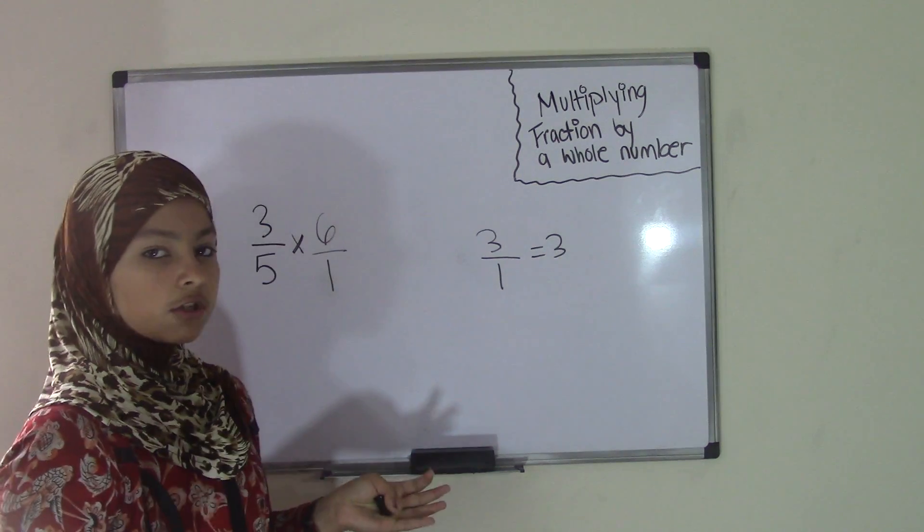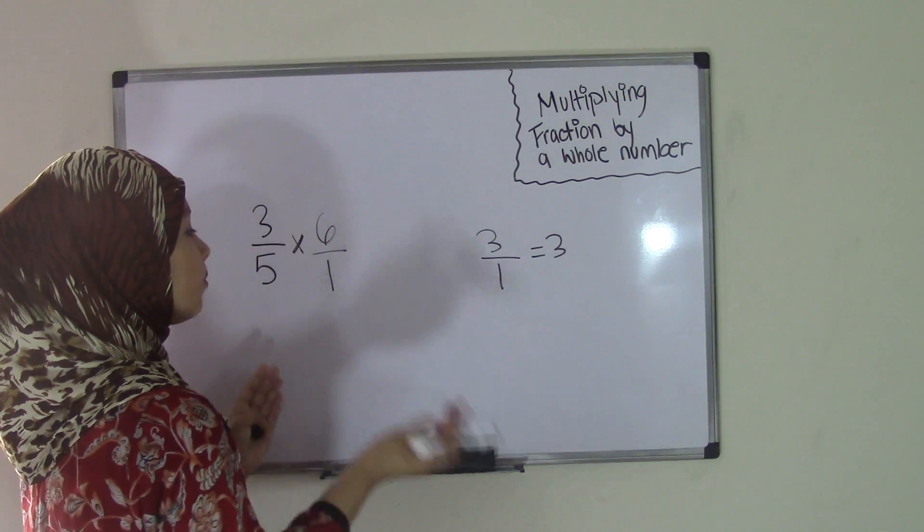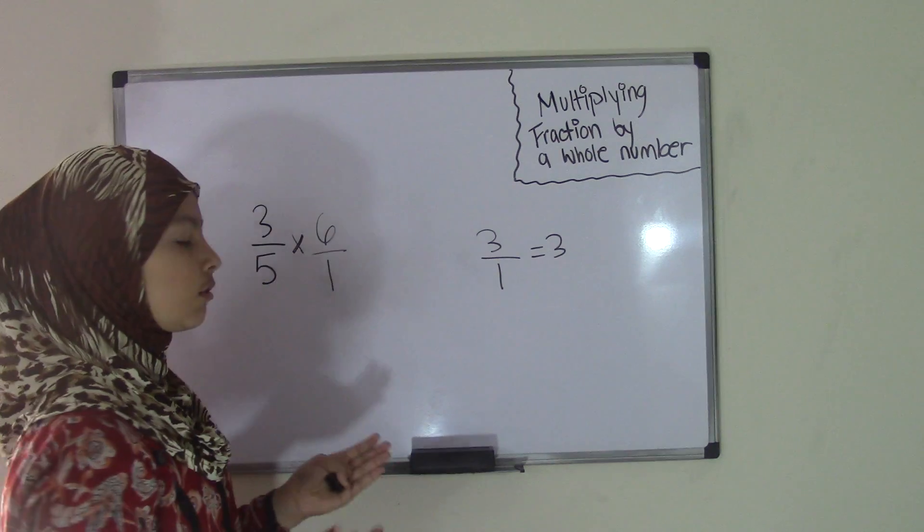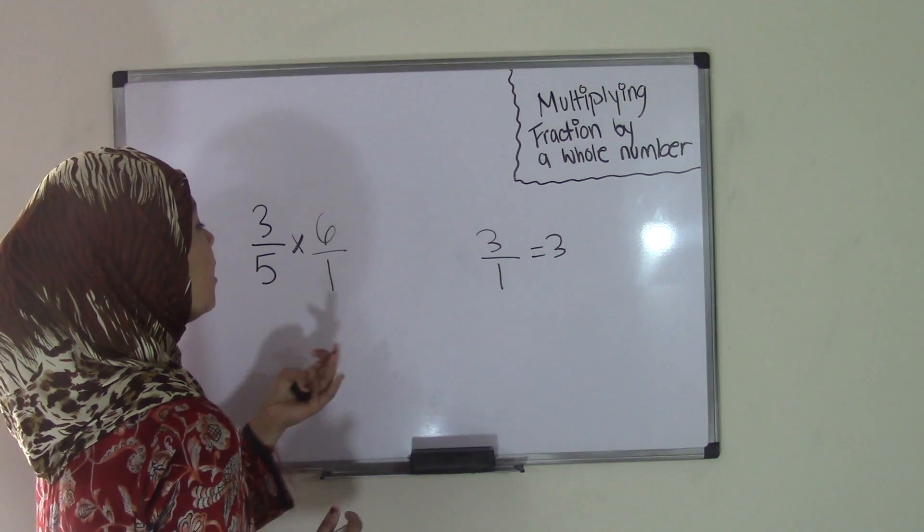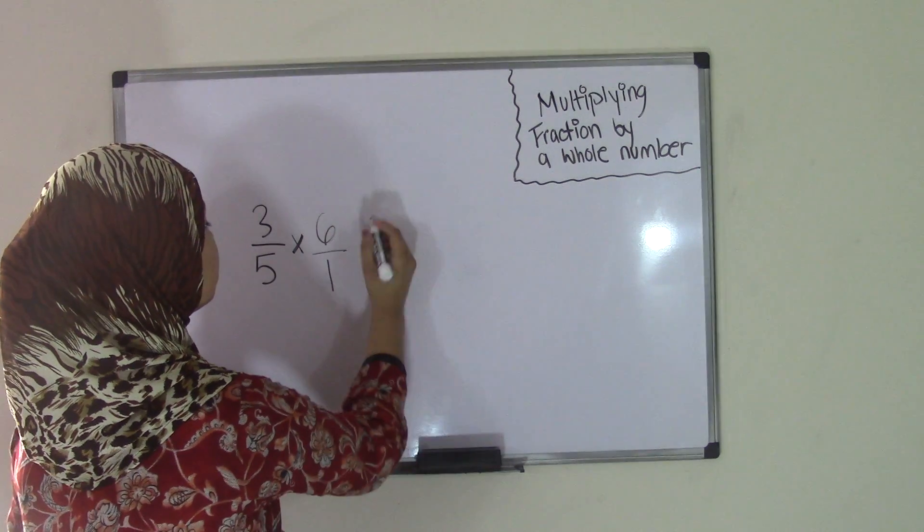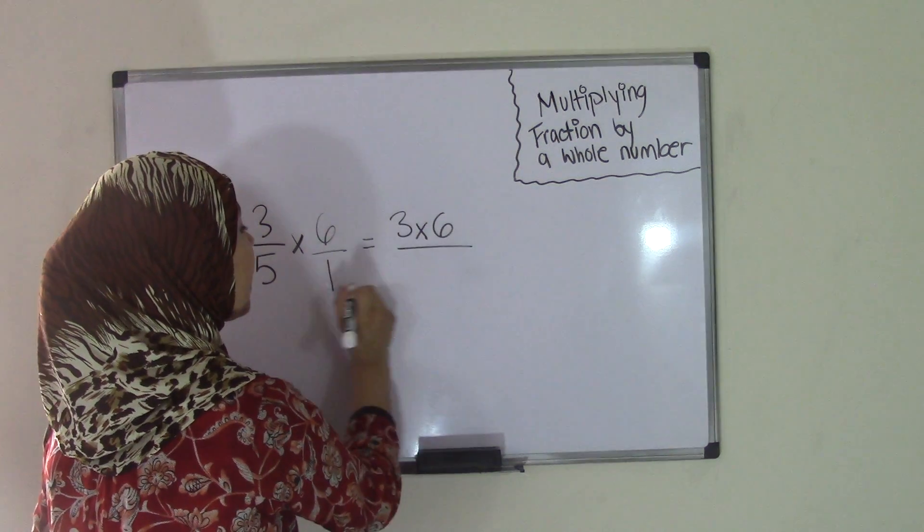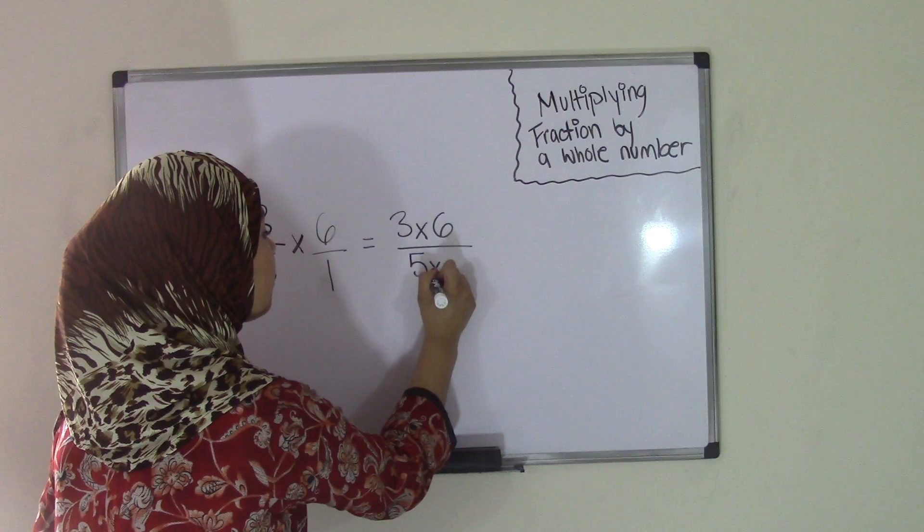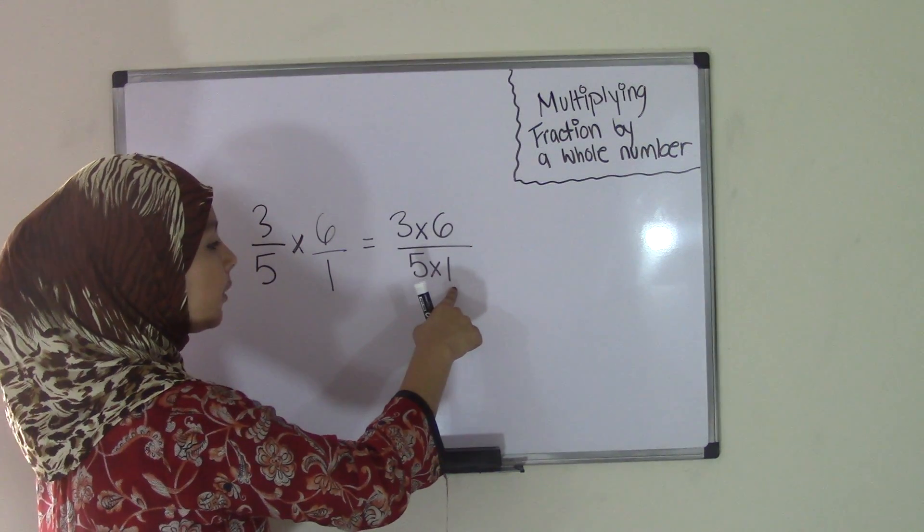Now all we have to do is put this together. So when you're multiplying, you're doing direct multiplication. It goes numerator times numerator and denominator times denominator. So that means you now have 3 times 6 over 5 times 1, because you have numerator times numerator and denominator times denominator.